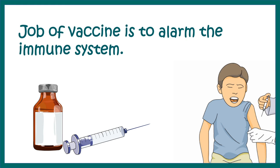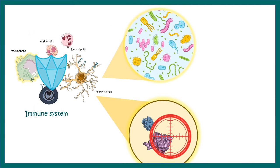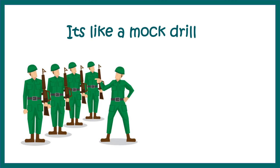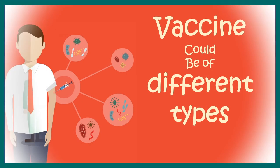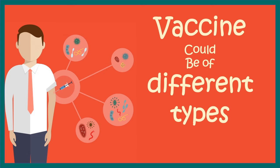The job of a vaccine is to raise an alarm to the immune system and make it more knowledgeable about an upcoming pathogen attack. Vaccination tells the immune system about the presence and nature of the virus, bacteria, or the antigen they possess, so the immune system has a complete profile of what is coming and can prepare ahead of time. It's like a mock drill that happens in the army. So let's talk about vaccines and their types.